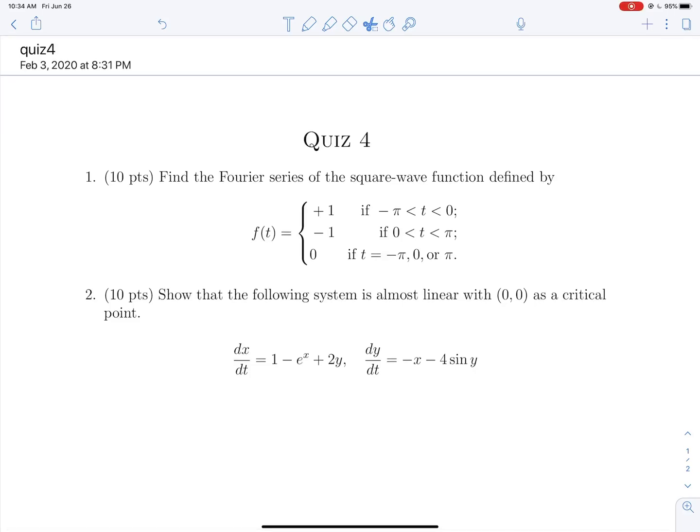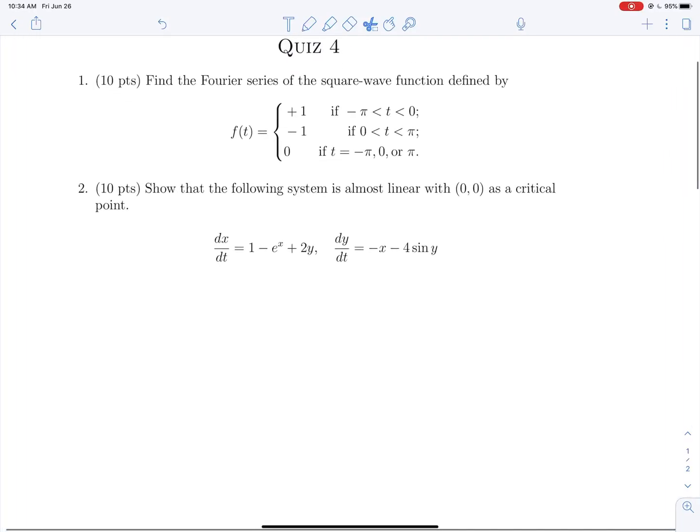This is quiz 4 for MA303. This was given in the summer of 2019 by Dr. Chen. We have question 1. Find the Fourier series of the square wave function defined here. So always, always with every Fourier series question that you do, you need to graph it out.